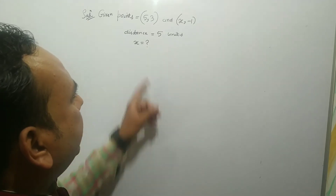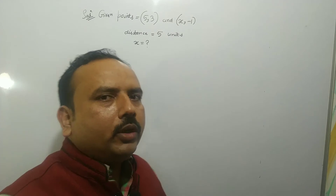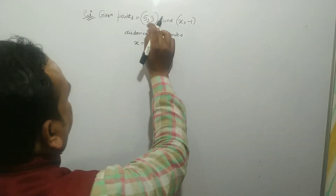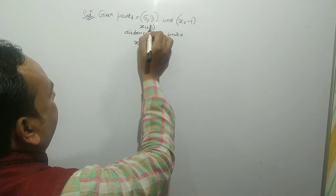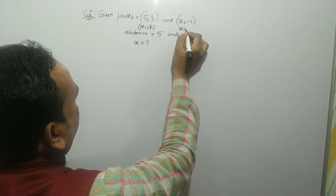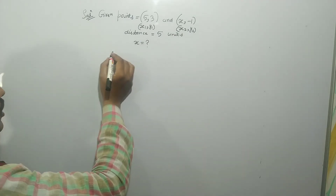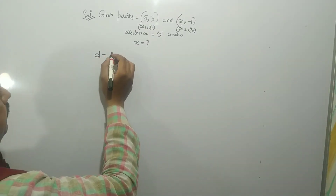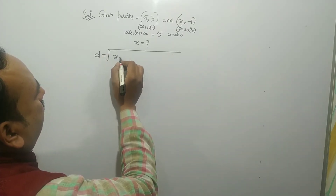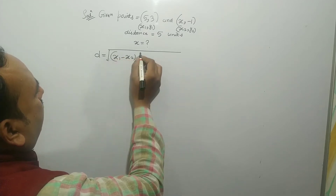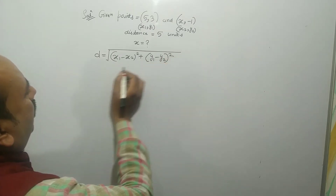तो हमें इसमें x की value find करनी है। इस type की questions को solve करने के लिए हम distance formula का use कर सकते हैं। First point के coordinates को x1, y1 consider कर सकते हैं और second point के coordinates को x2, y2 consider कर सकते हैं। Now write the distance formula: d = √[(x1 − x2)² + (y1 − y2)²].